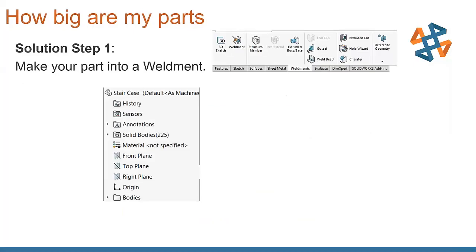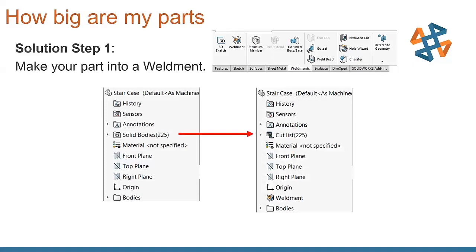What we can do, we can make our part into a weldment. Any part can be turned into a weldment. So we start off with having 225 solid bodies in this part or file here, and if we turn it into a weldment, it turns those solid bodies into cut list items.